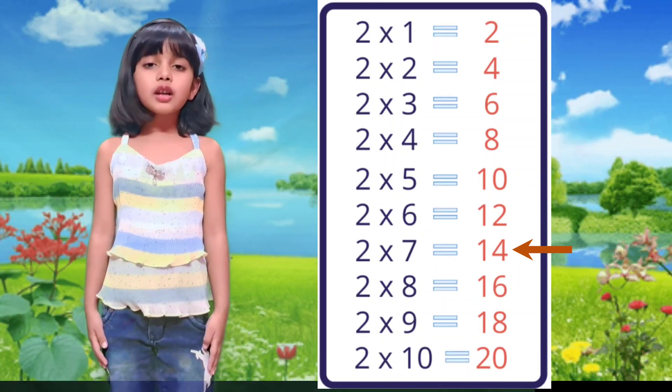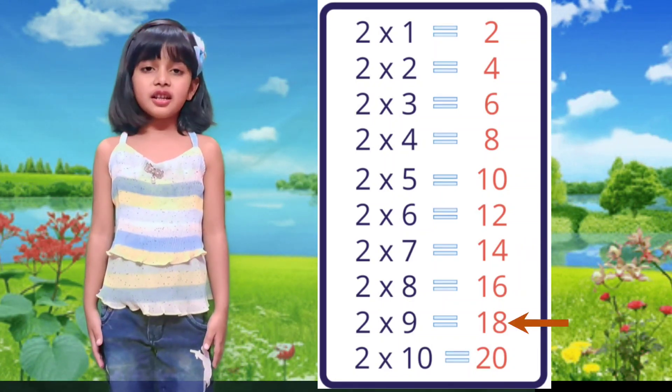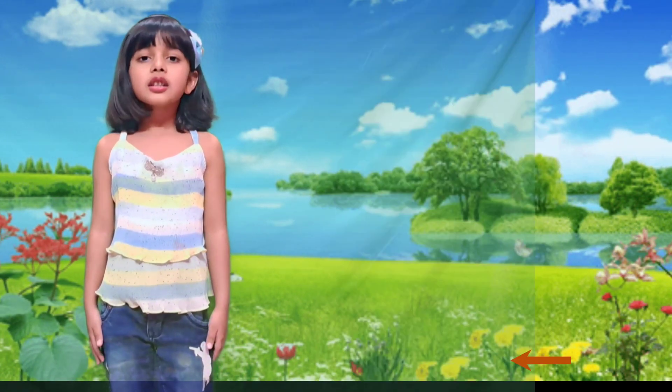2×7 is 14, 2×8 is 16, 2×9 is 18, 2×10 is 20.